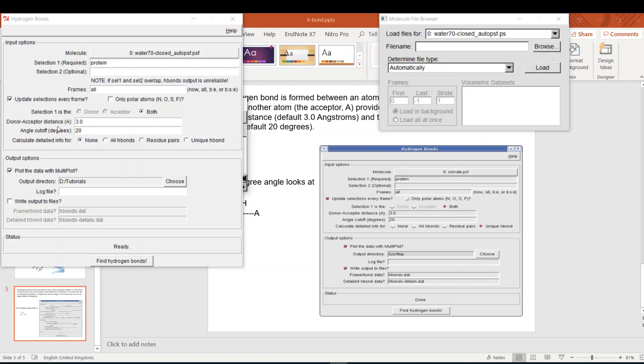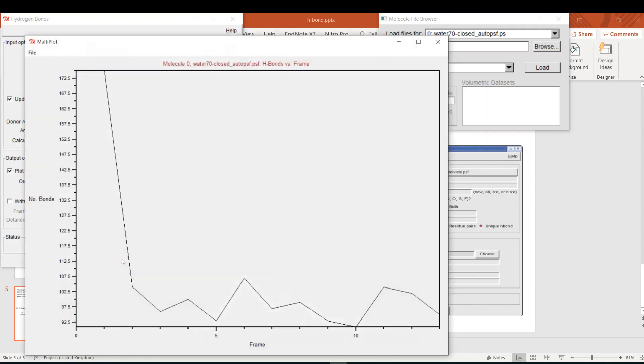I will keep it like 3 angstroms and 20 degrees. I will follow the default cutoff distance and angle for VMD. This is also a very nice option - you can calculate the detailed information for your hydrogen bonds. I choose none, but you can make it for unique hydrogen bonds or all hydrogen bonds, whatever. You can write an output file but I will not do so. I will just plot it. So let's find my hydrogen bonds.